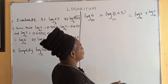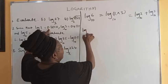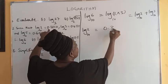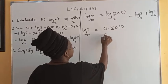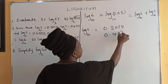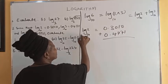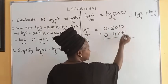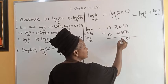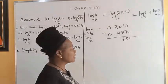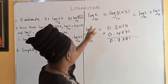So we add the given values. Log 3 in base 10 is 0.4771. Adding: 0 plus 1 is 1, 1 plus 1 is 1, 1 plus 7 is 8, 0 plus 7 is 8 — so we have log 6 in base 10 equal to 0.7781.